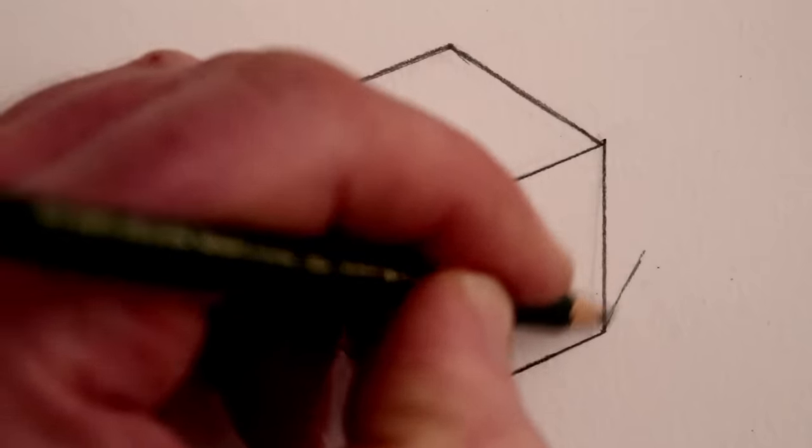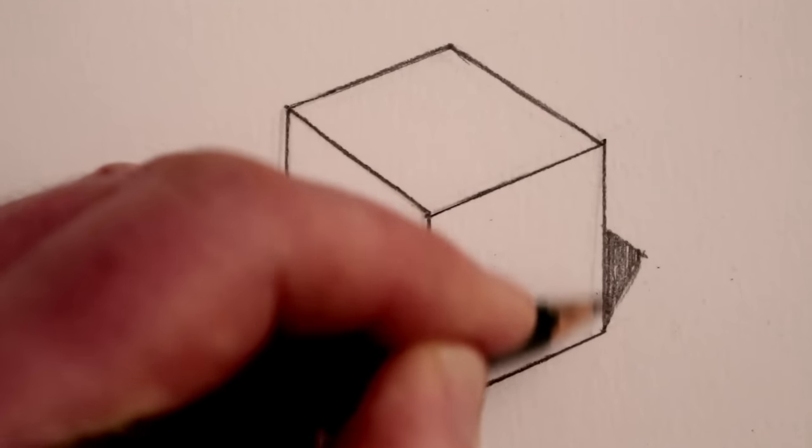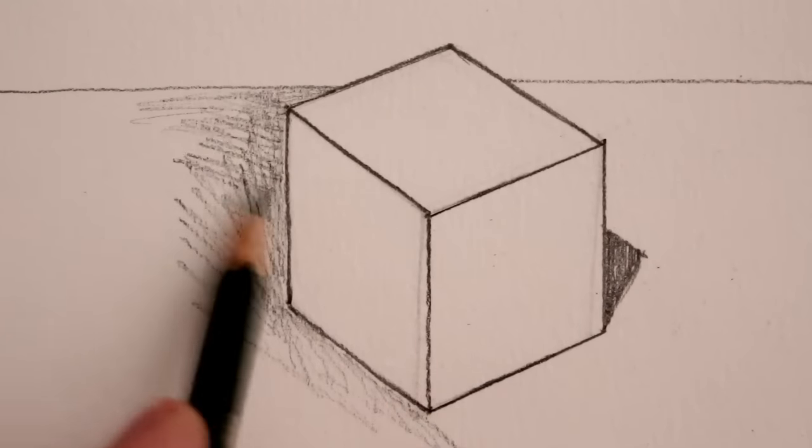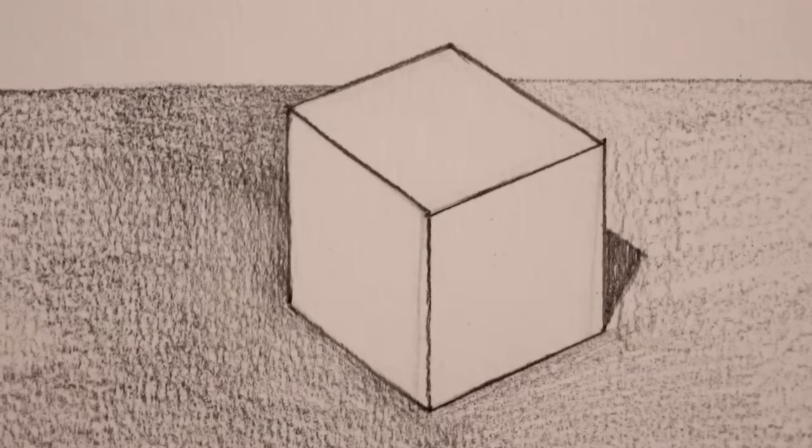So again I'll just speed up the video at this stage and put in some tone. One side light, one side medium, one side dark and then a variety of shadows and reflections on the surface which it's on.